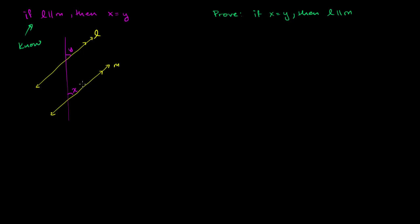And what I'm going to do is prove it by contradiction. So let's put this aside right here. This is our goal. I'm going to assume that this isn't true. So I'm going to assume that X is equal to Y and L is not parallel to M. So let's think about what type of reality that would create.